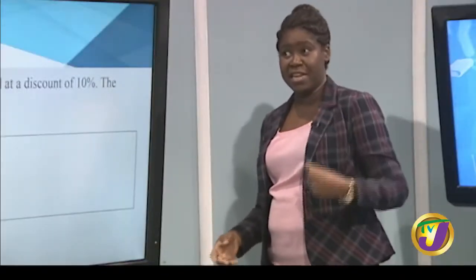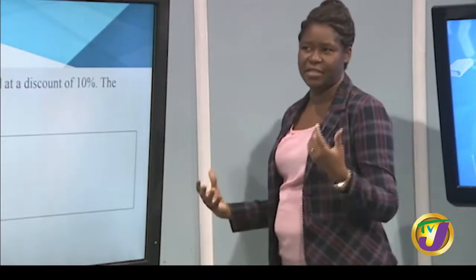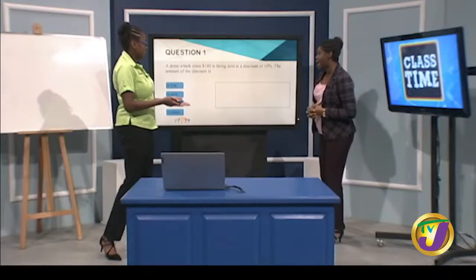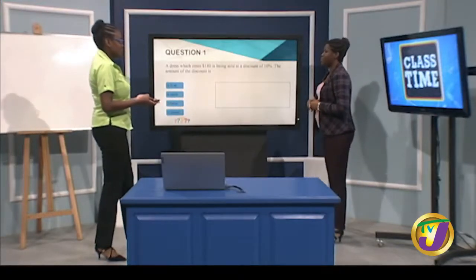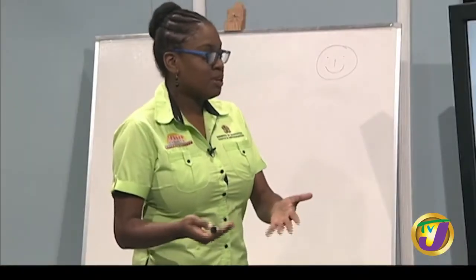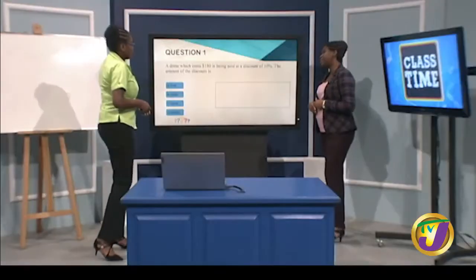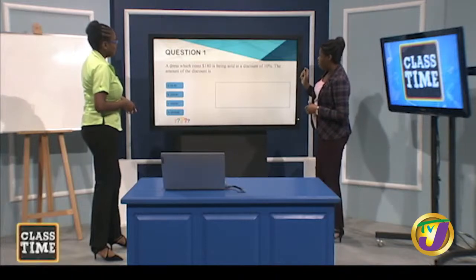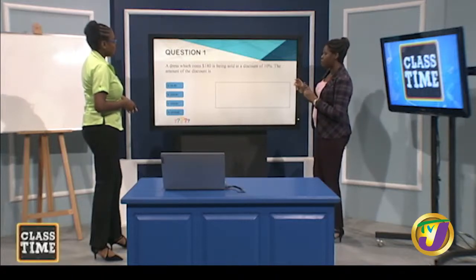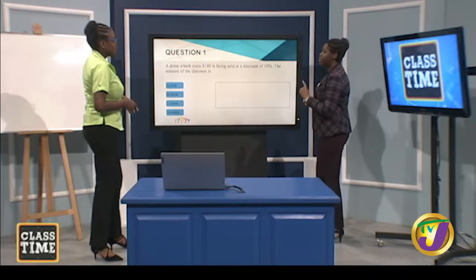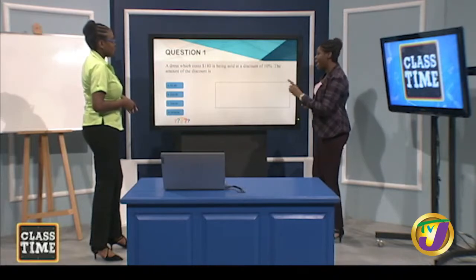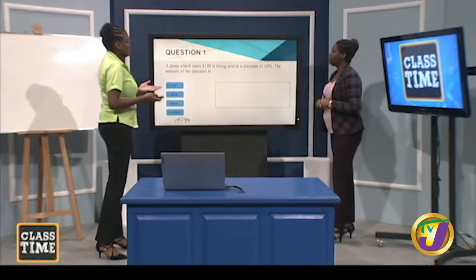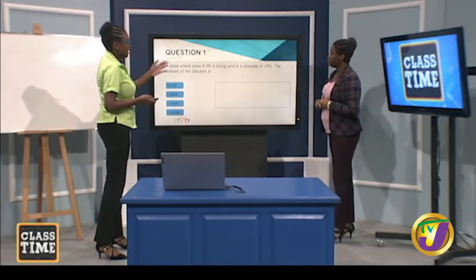Discount can be given as a percentage or a monetary amount — it's a reduction. They are asking for the amount of the discount, not the amount you will pay for the dress after applying the discount. So we're looking at the figures 180 and 10.